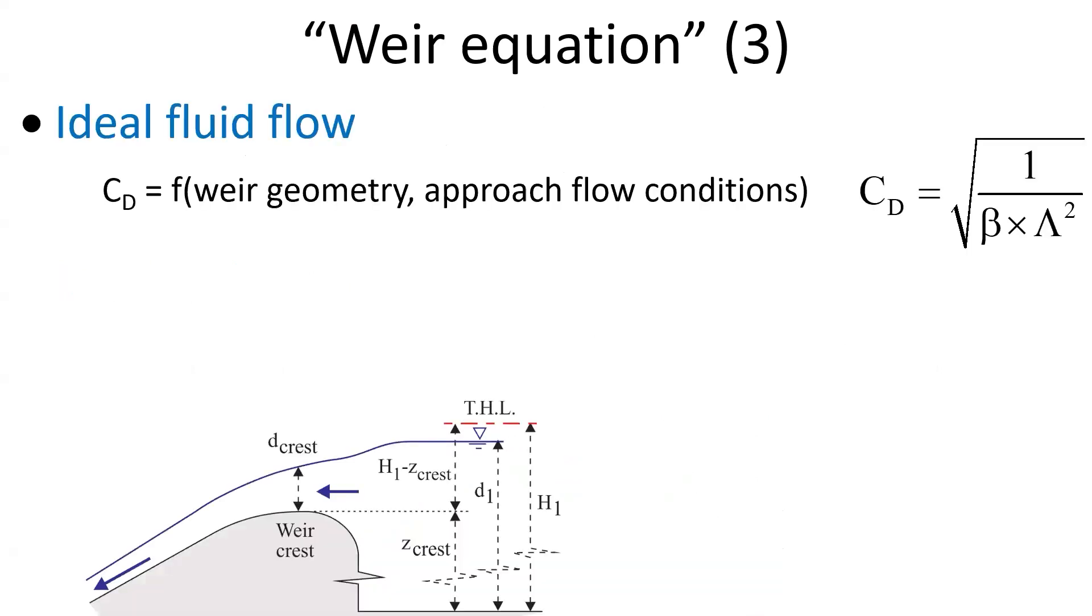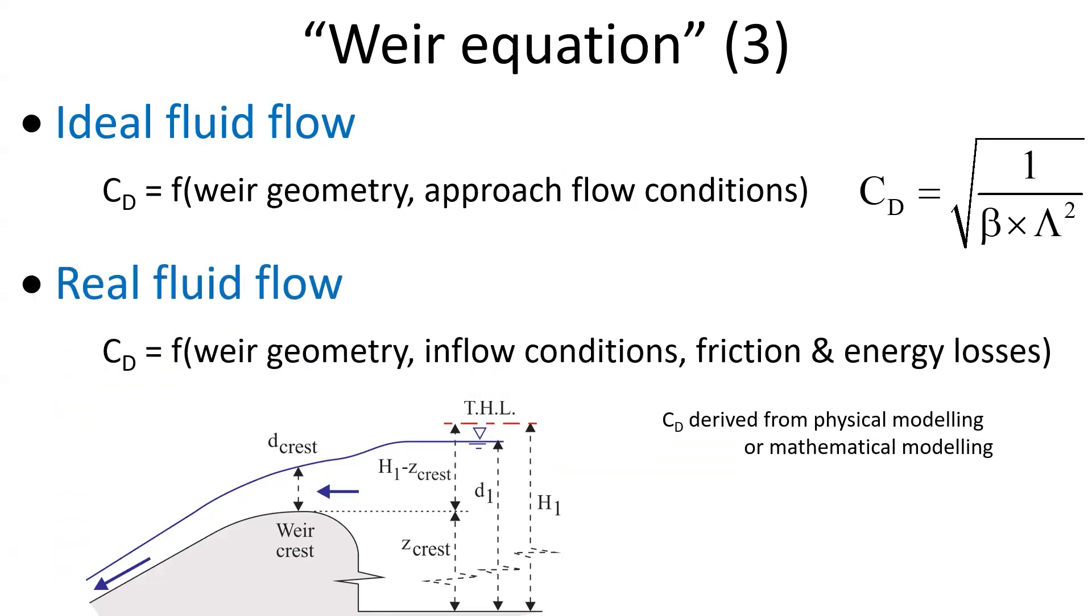Thus, for an ideal fluid flow, the dimensionless discharge coefficient is a function only of the approach flow condition and geometry, with an analytical expression as a function of beta and lambda shown here. While for real fluid flow, Cd will account in addition to friction and energy loss.